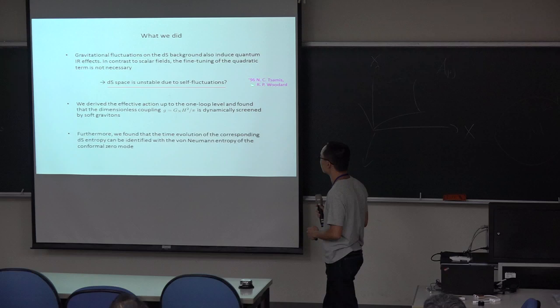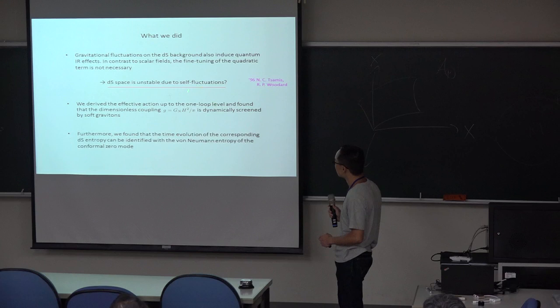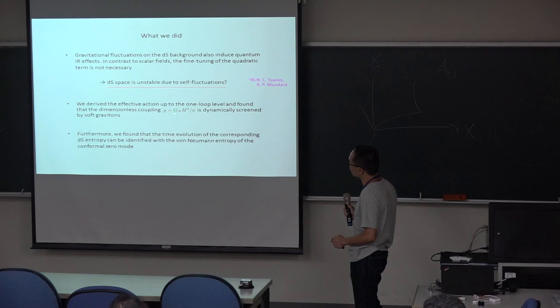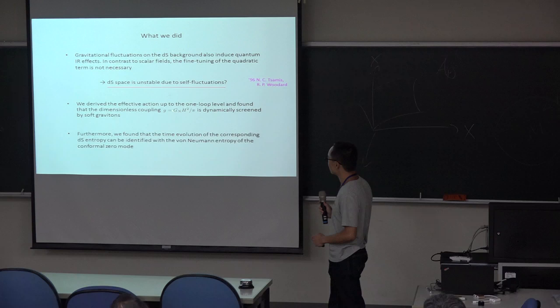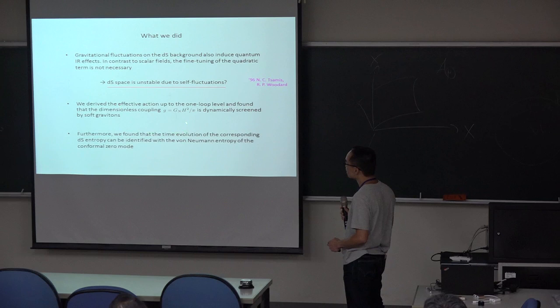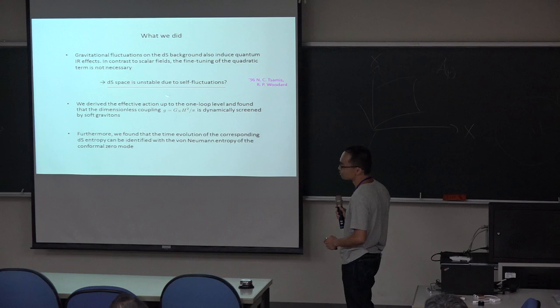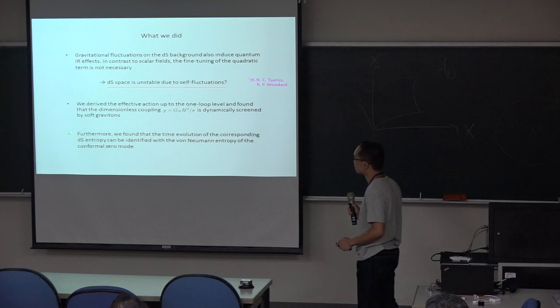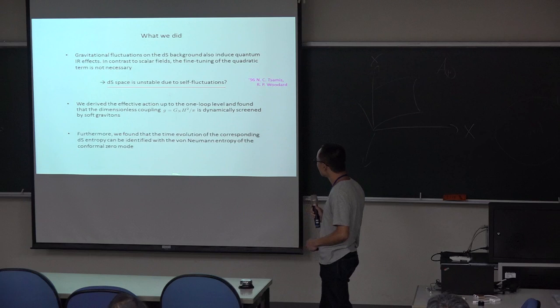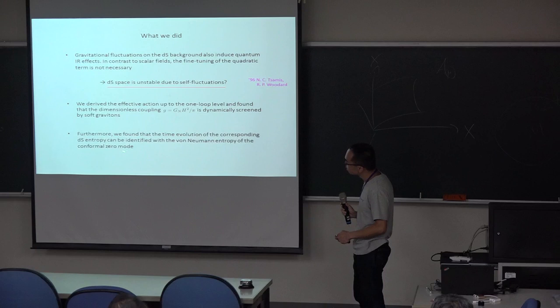What we did, we derived the effective action up to the one-loop level and found that the dimensional coupling, the Newton's coupling, and the cosmological constant are the unique choice of the dimensional couplings in Einstein gravity with dynamical scale factor. Then the result may give a positive answer to this context. Moreover, we found that the time evolution of the corresponding de Sitter entropy can be identified with the quantum running of the couplings. The time evolution will increase, then in terms of the entropy, the screening of the ultraviolet solution is stable.